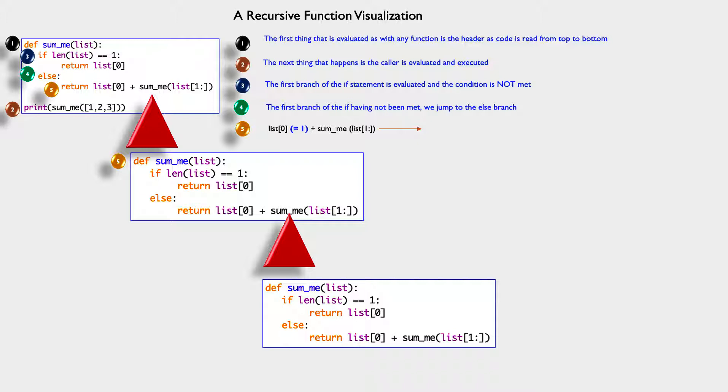So list[0], the first element of the list, is one. That wants to be added to the sum of everything else in the list. So that would be two and three. However, that calls the function again. So what happens?